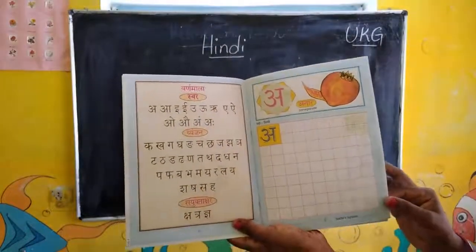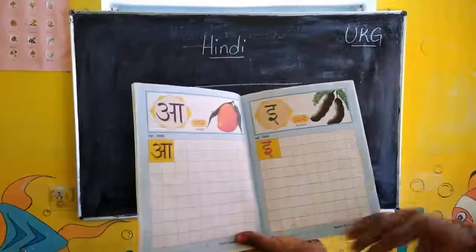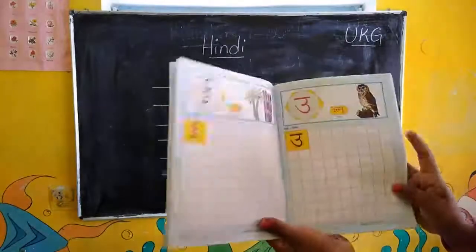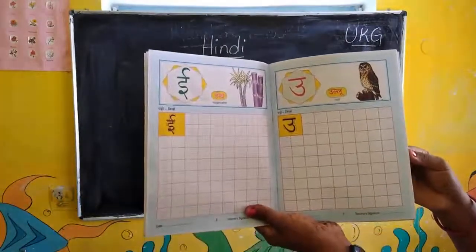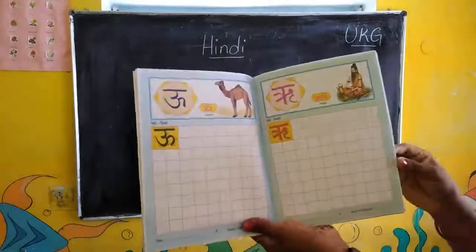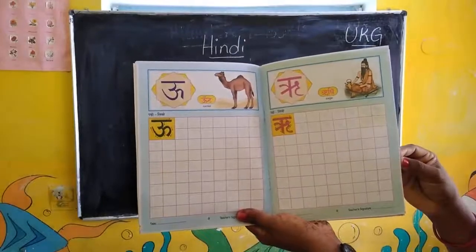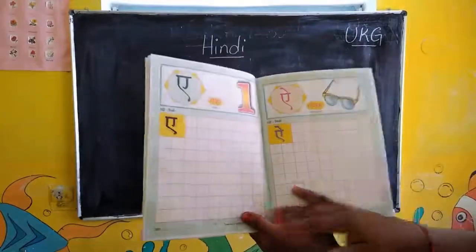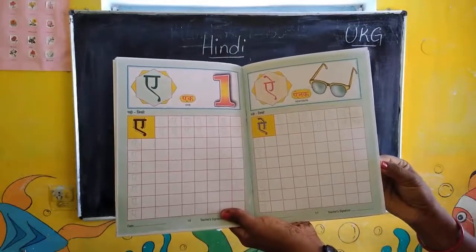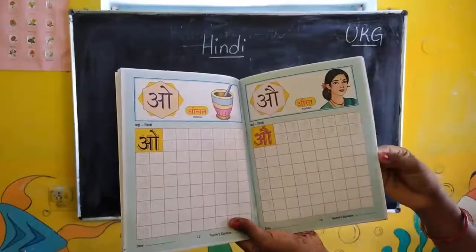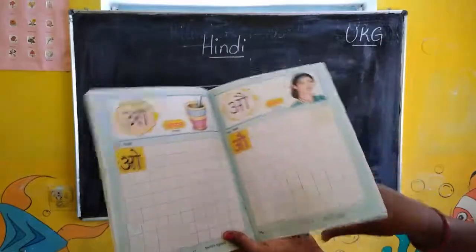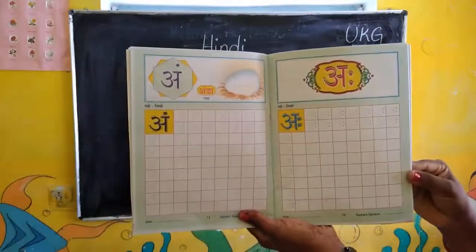A — aa. I — ee. U — oo. E — ay. O — o. O say — O Kli. O say — O Rad. O say — Anda.